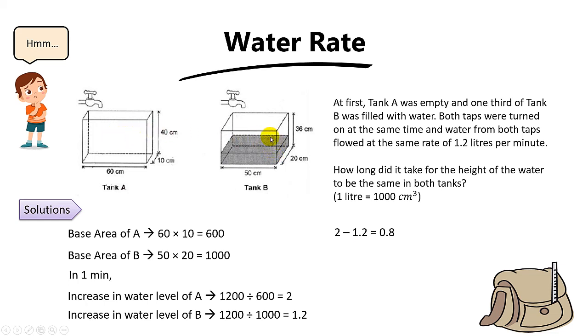Since the tank is one-third filled, the water level at first will be 36 divided by 3, you get 12 cm. So now to find a time when the water levels are the same, you need to take 12 divided by 0.8 and you will get 15 minutes.